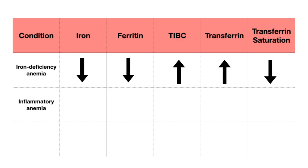Let's now contrast this with inflammatory anemia, because this is where a lot of confusion can occur, particularly on exam questions. With inflammatory anemia, the iron level is interestingly going to be low. Whenever there is chronic inflammation, there's going to be an increase in levels of acute phase reactants, one of which is known as hepcidin. Hepcidin causes decreased iron absorption from the gut, as well as decreasing the release of iron stored in macrophages. So the iron is pretty much trapped in the macrophages, making it look like iron levels are low in the bloodstream, although the iron stores are actually adequate. Our iron levels are going to be low, but the ferritin levels are going to be high because iron is trapped in storage.